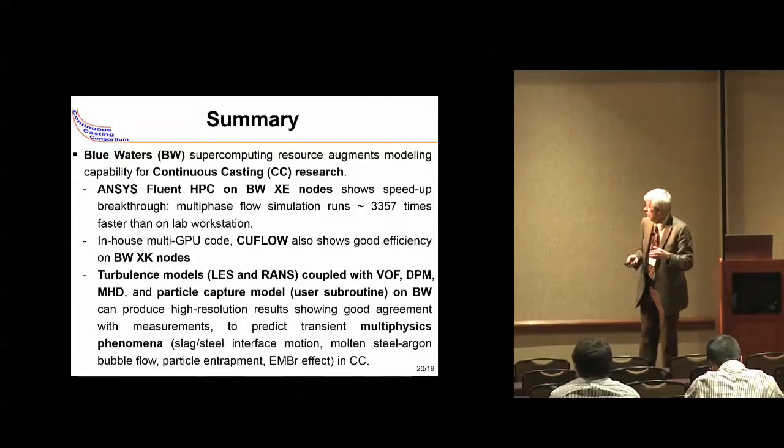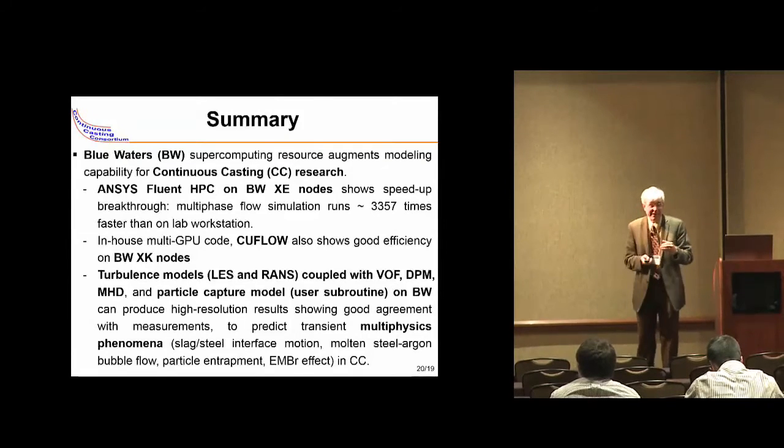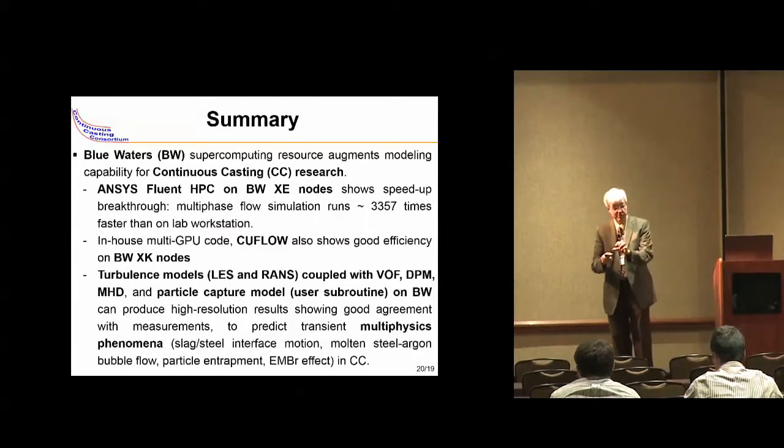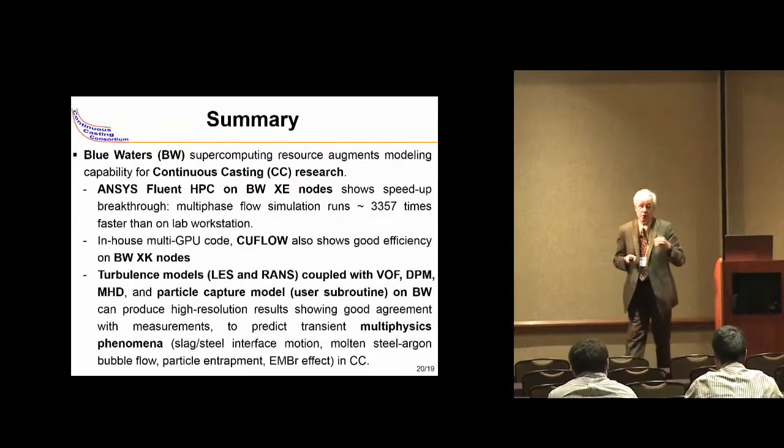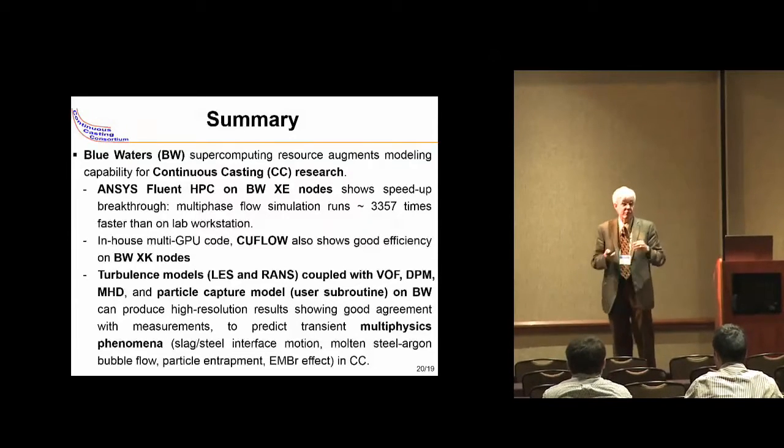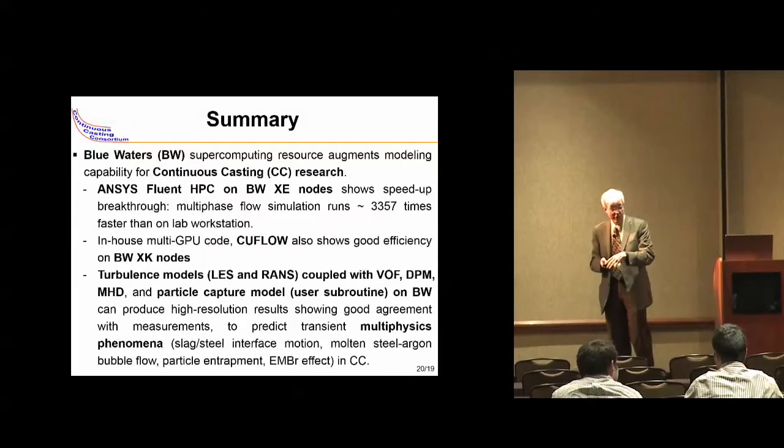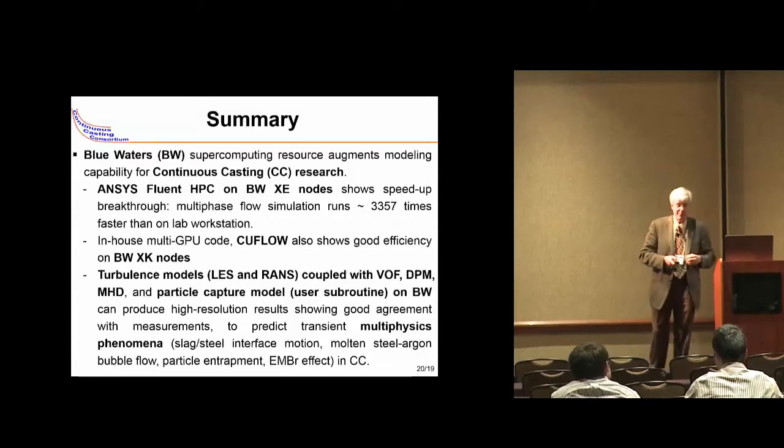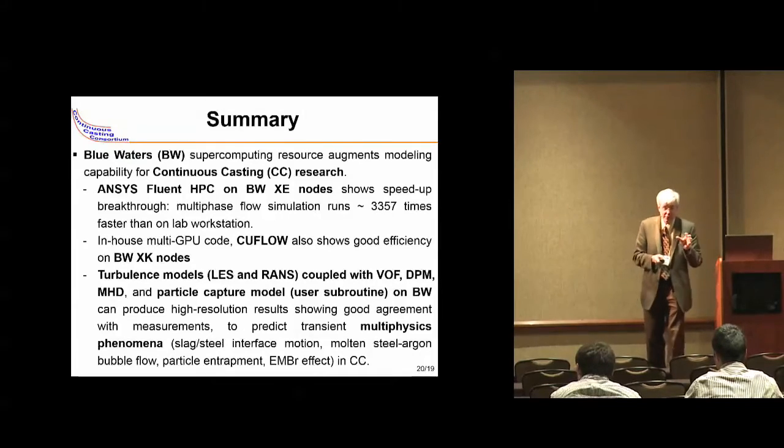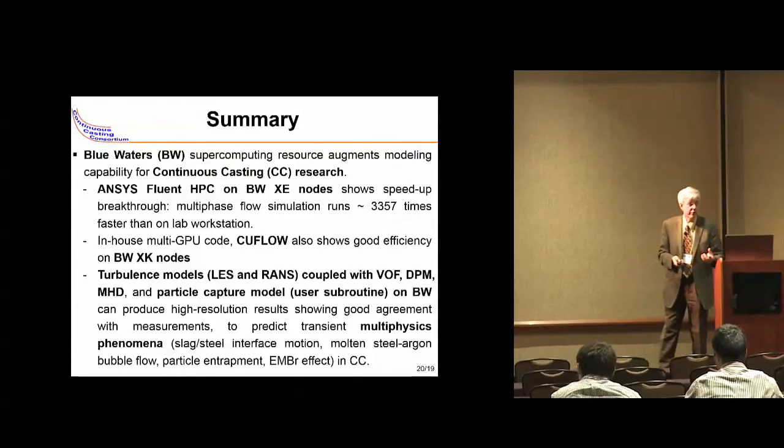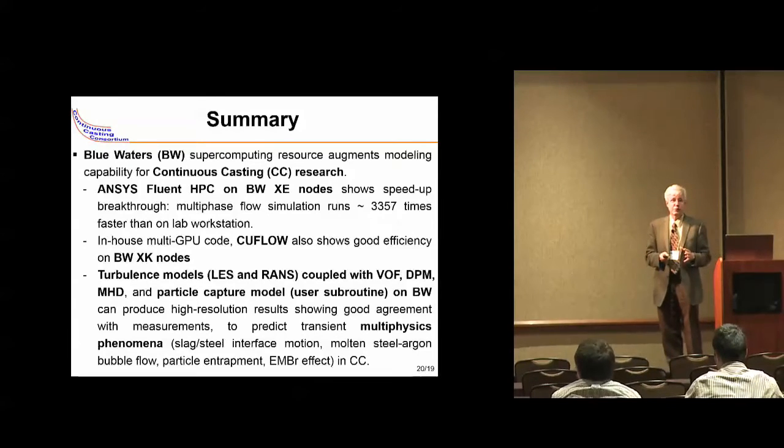One example: although on some runs we can get 3,000 times speed up, if we turn on some features of the model such as linking between the top surface and the slag layer, one of our algorithms slowed down so much we didn't get any speed up at all. Our lab workstation was actually faster than Blue Waters. So those simulations we need to do in the lab workstation. It's very important to pay attention to those little details—how your algorithm works makes a huge difference to whether you can get good use out of the supercomputer.